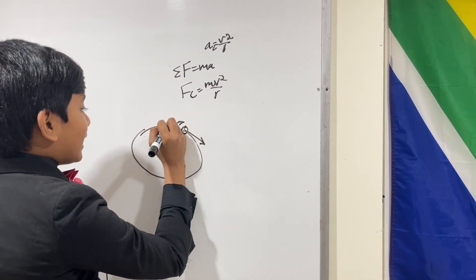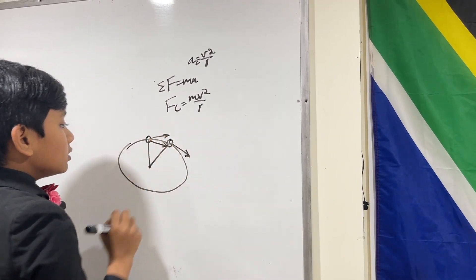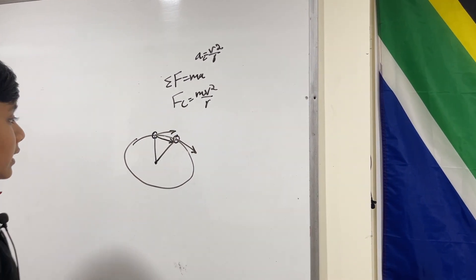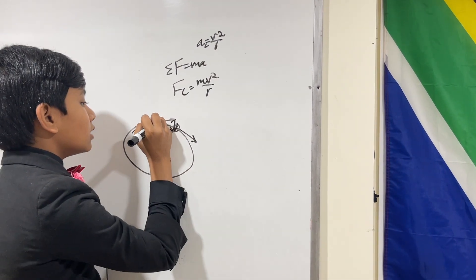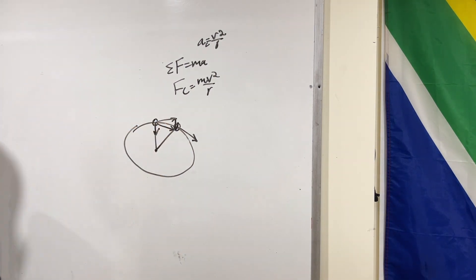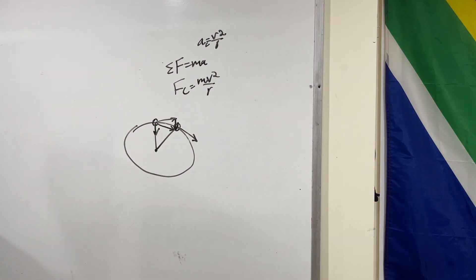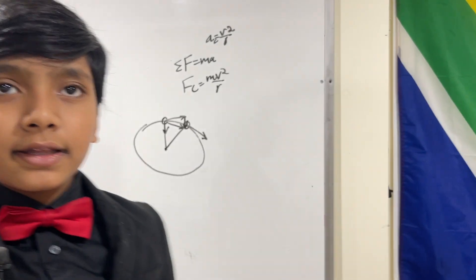So now, you can see that the difference of these is essentially a downwards line, which points directly towards the center. Isn't that beautiful? Alright.